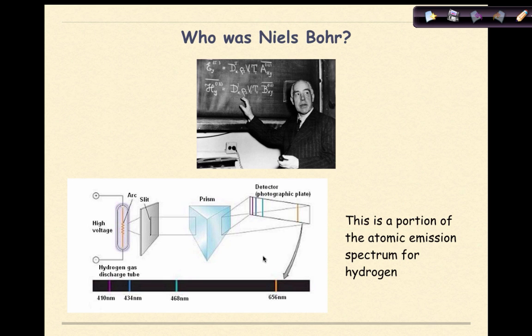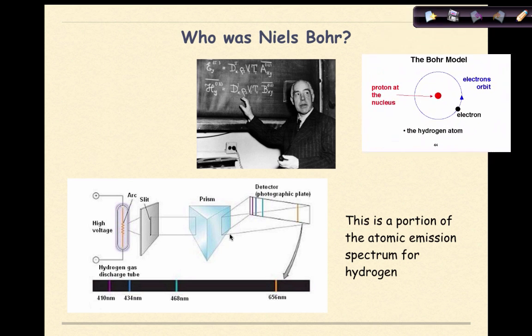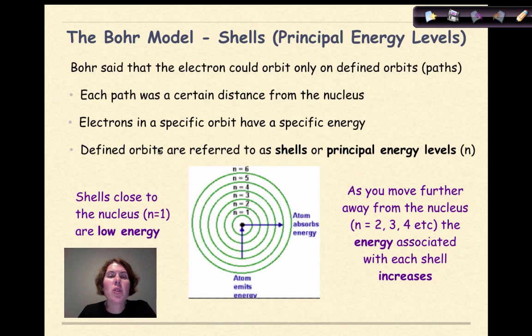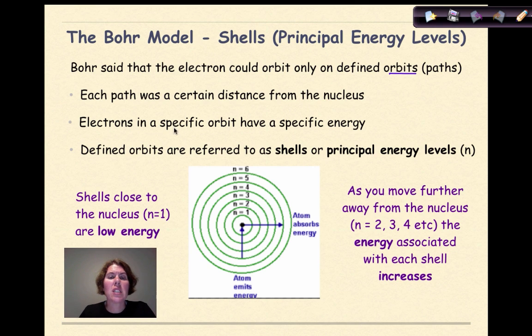In order to explain this observation, Bohr had to revise Rutherford's model of the atom. Like Rutherford, Bohr also proposed a planetary model of the hydrogen atom with a positively charged nucleus with mass. However, the Bohr model focused on the behavior of electrons to explain the line spectrum phenomena. Bohr said that the electron could orbit only in defined orbits or paths, and each path was a certain distance from the nucleus. Electrons in a specific orbit have a specific energy. These defined orbits are referred to as shells or principal energy levels.